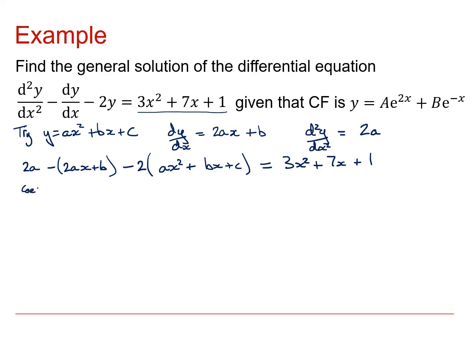So I'm going to look at the coefficients on both sides. If I start by looking at the x² coefficients, I've just got -2a on this side and 3 on this side, so that tells me that a equals -3/2. If I look at the x's now, I've got -2a from the first bit and -2b from the second bit, and that's going to be equal to 7. But I already know that a is -3/2, so this gives me 3 - 2b equals 7, and this tells me that b equals -2.